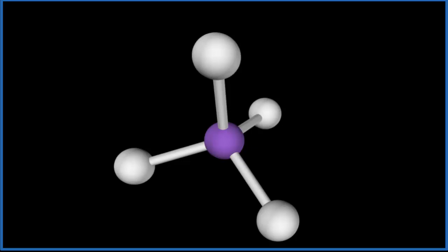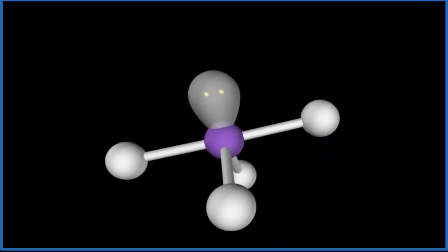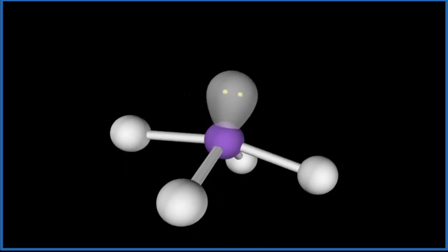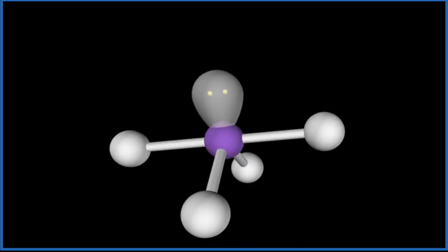But remember that lone pair, that occupies space. And when we put that here, it pushes everything down. We end up with what's called a seesaw molecular geometry for TeCl4.